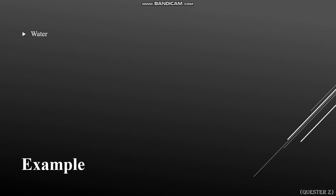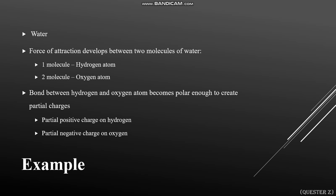Water is a common example in which hydrogen bonding exists. The force of attraction develops between two molecules of water (H₂O). One molecule contributes a hydrogen atom and the second molecule contributes an oxygen atom. The bond between hydrogen and oxygen becomes polar enough to create partial charges due to the difference in electronegativity between hydrogen and oxygen.